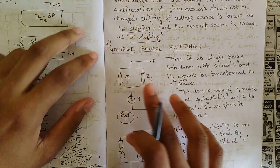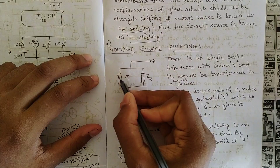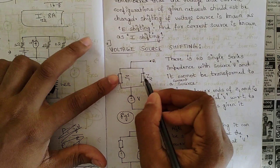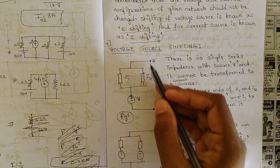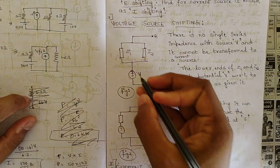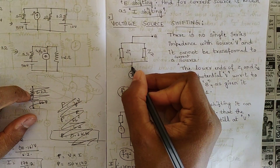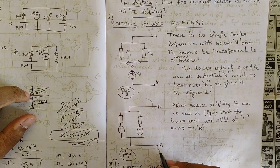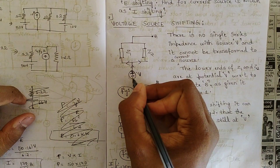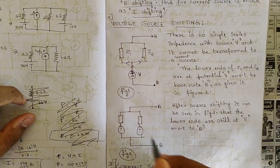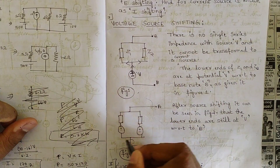Let's see how the voltage source shifting takes place with a simple circuit. Here we have a simple circuit between terminals A and B. There are two impedances Z1 and Z2 connected in parallel, along with one voltage source. This is before shifting, and this figure is after shifting. You can see that this voltage source has been shifted to these two branches — it has traveled one in each direction.